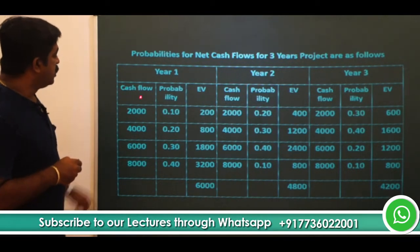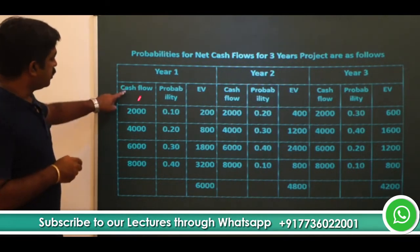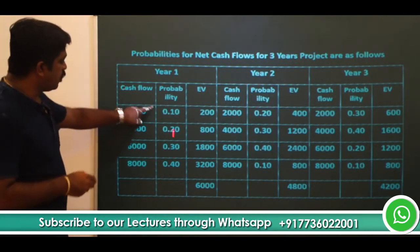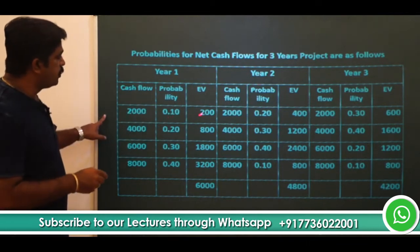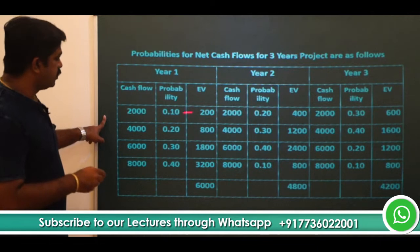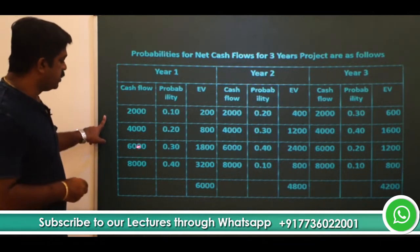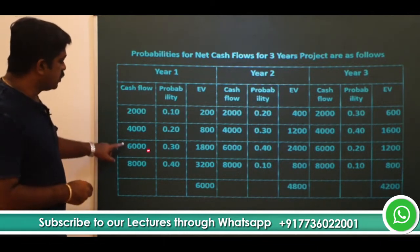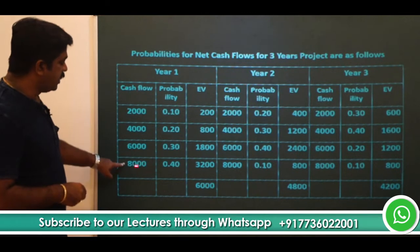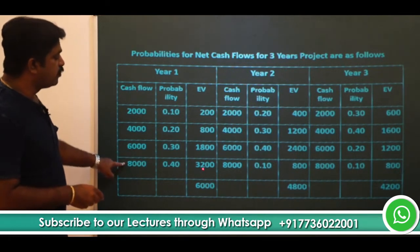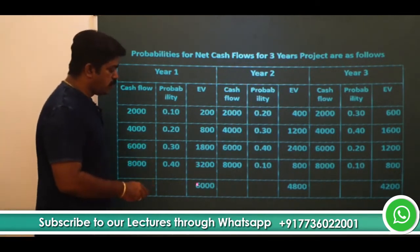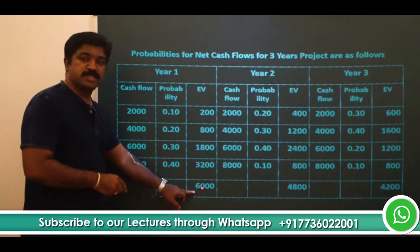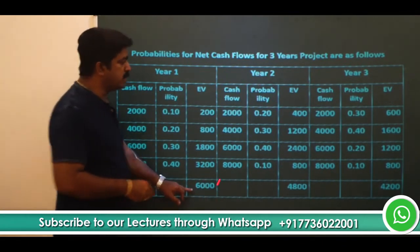For year 1, multiply each cash flow with its probability to get the expected value: 2000 × 0.1 = 200, 4000 × 0.2 = 800, 6000 × 0.3 = 1800, and 8000 × 0.4 = 3200. Totalling all four gives 6,000, which is the expected cash flow for year 1.